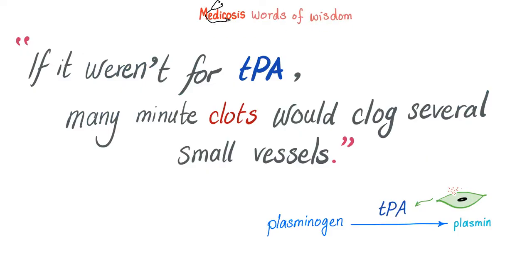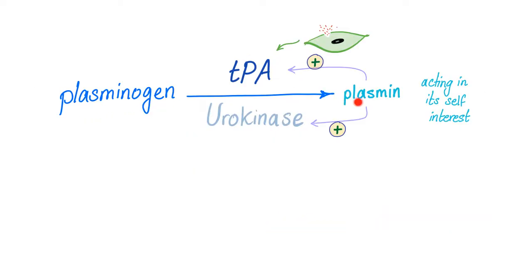Because if it weren't for TPA, many minute clots would clog several small vessels all over your body. Without TPA, you would have millions of clots in your brain, in your legs, in your heart, in your GI tract, and even your genitalia. So you should be grateful that you have TPA. Plasminogen into plasmin, thanks to TPA.